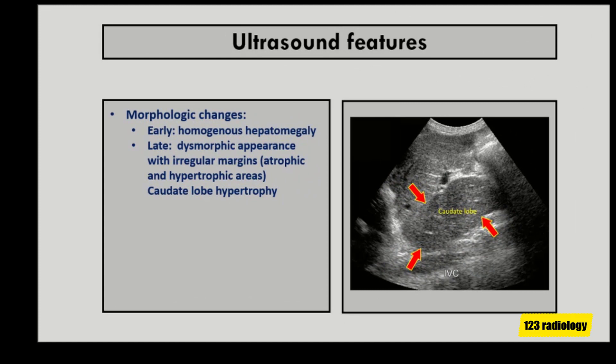In Budd-Chiari syndrome, the liver undergoes morphologic changes during the course of the disease. In the acute stage, the liver is enlarged with a homogeneous echo pattern and a smooth contour. During the chronic stage, atrophic and hypertrophic areas may coexist, giving a dysmorphic appearance with irregular margins. Areas affected become atrophic, while healthy areas undergo compensatory hypertrophy.